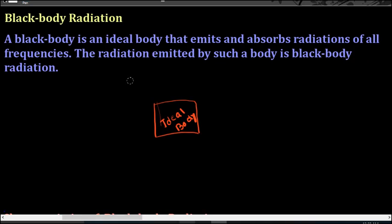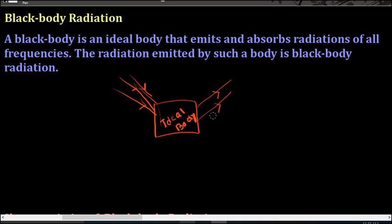The radiations emitted by such a body are known as black body radiation. Suppose we have an ideal body that can absorb radiations of all frequencies — the radiations that the body has absorbed are also emitted, leaving no radiation left in the body. Such bodies are known as black bodies.